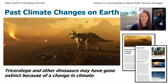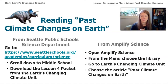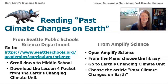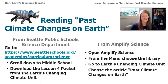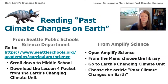So we know that the climate and temperature have changed before. If you need a copy of the article, you can get it from the lesson four packet at the Seattle Schools website: www.seattleschools.org/academics/curriculum/science. Scroll down to middle school and download the lesson four packet for Earth's Changing Climate Unit. Or you can go to your Amplify Science account, go to the menu, select the library, and choose the article called Past Climate Changes on Earth.